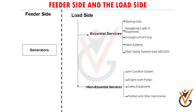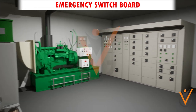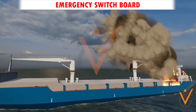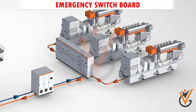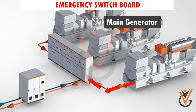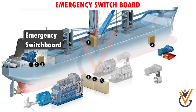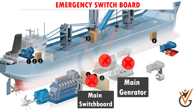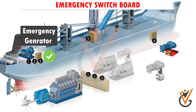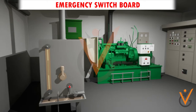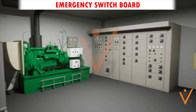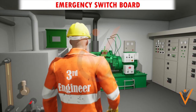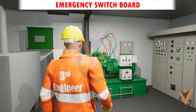The emergency switchboard supplies equipment and machinery essential during any emergency, like fire or flooding. During normal operation, power is supplied from the main generators to the main switchboard, and the emergency switchboard gets its supply from the main switchboard. When the main generators fail, the main switchboard loses its supply, causing the emergency generator to start automatically and supply the emergency switchboard, ensuring critical equipment and essential services are always maintained for the safety of the ship and personnel.